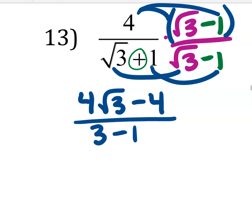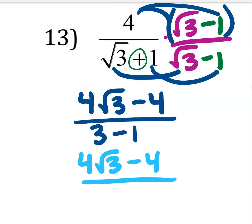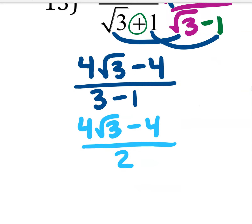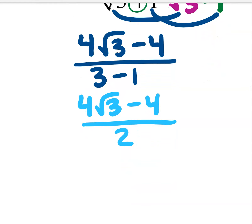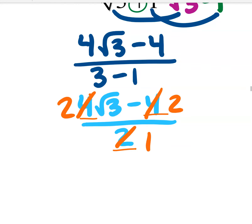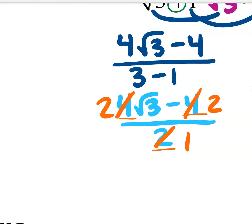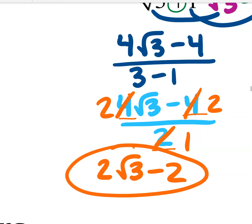On top, distribute the 4 to everything: 4 times √3 times √3 is 4 times 3, and 4 times negative 1 is negative 4. Look — no radical! On the bottom: 3 minus 1 equals 2. Now simplify: the top is 4√3 minus 4, all over 2. All outside numbers — 4, 4, and 2 — can be divided by 2, giving 2√3 minus 2, which is our final answer.